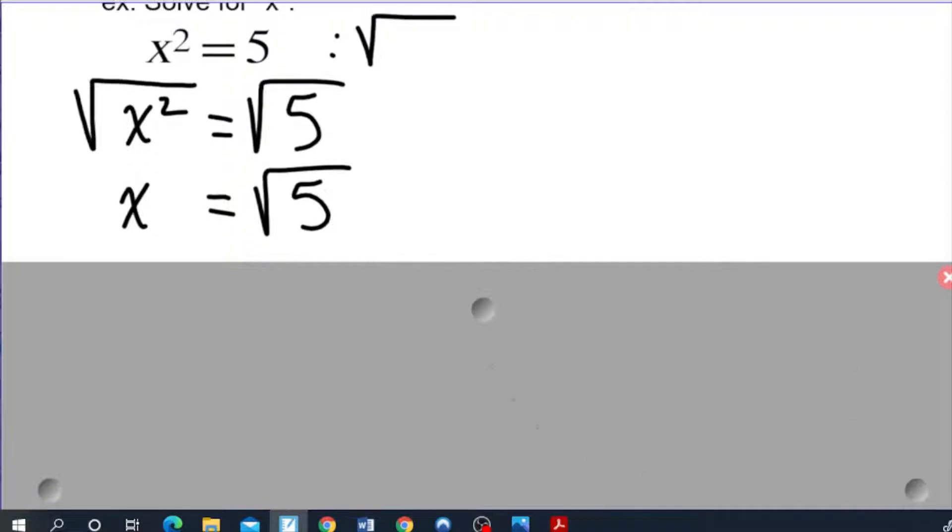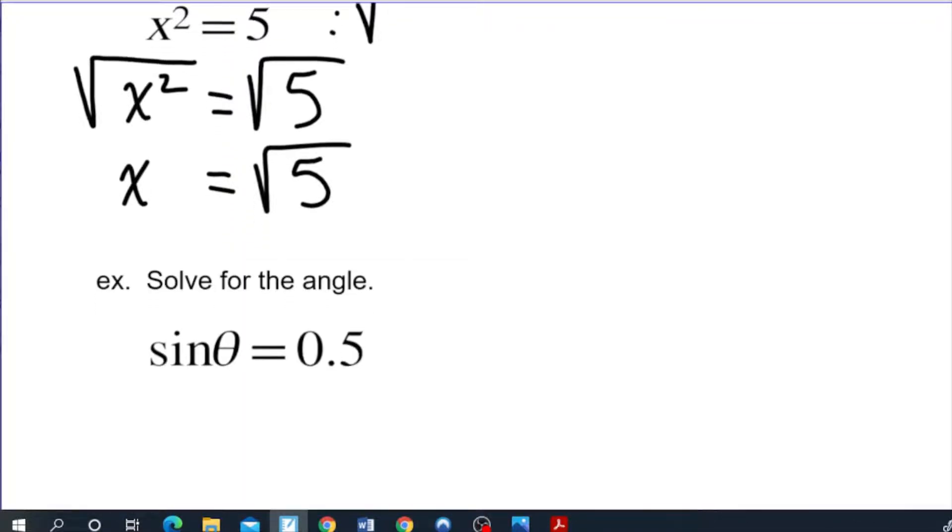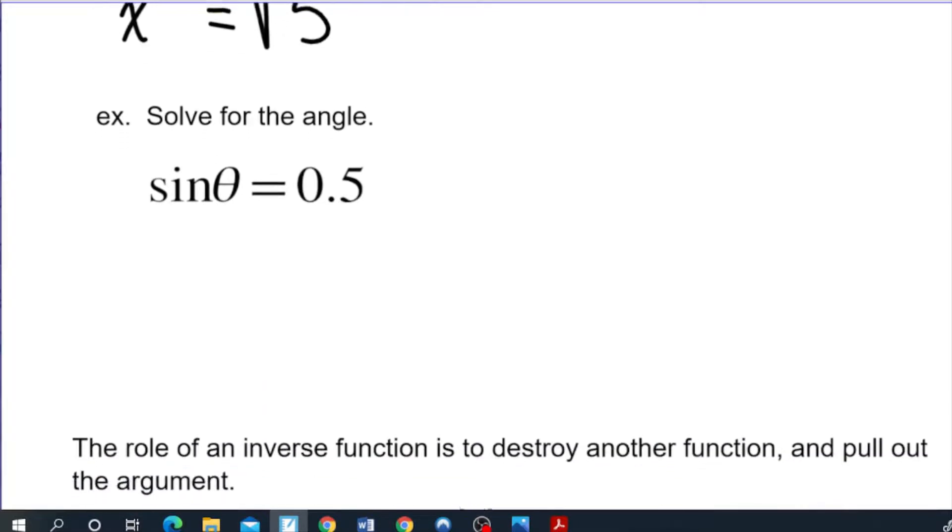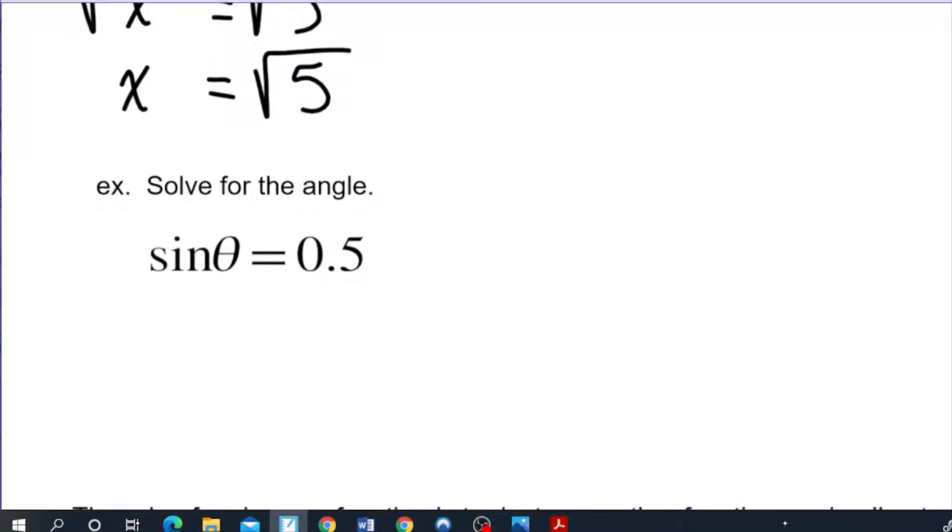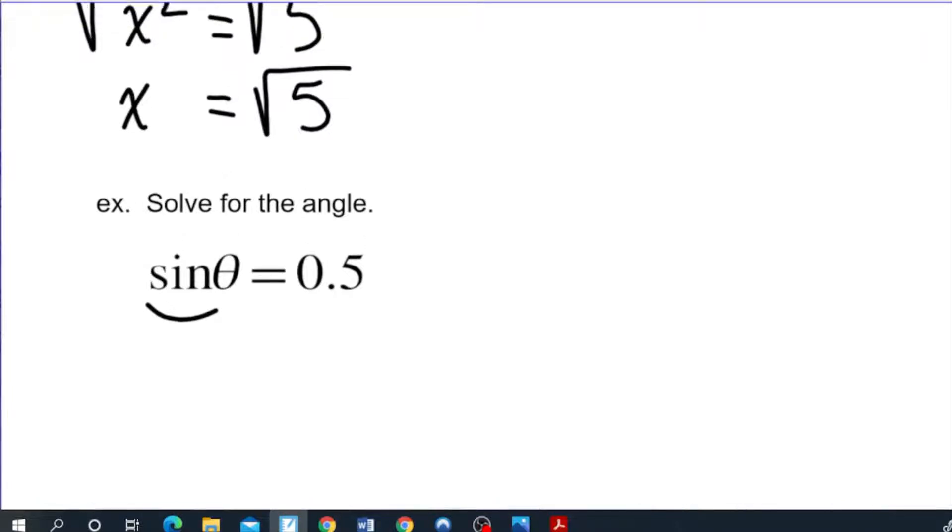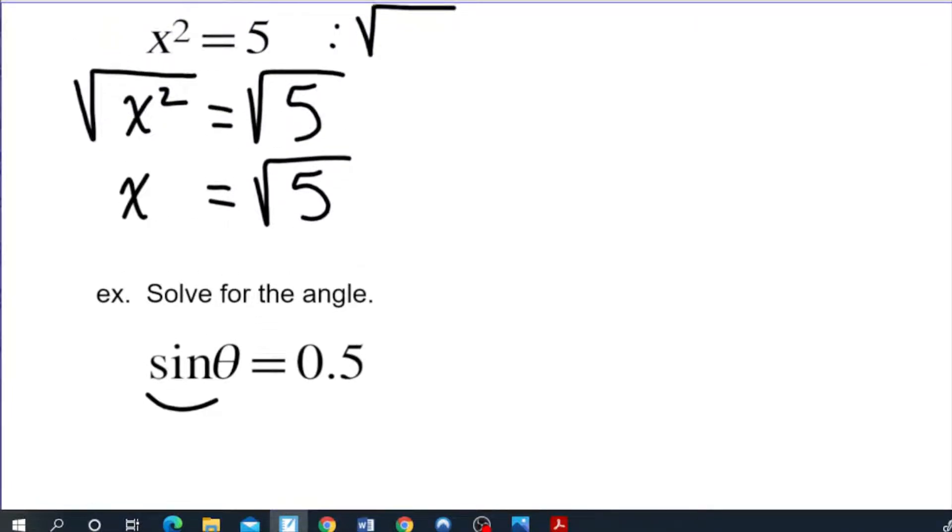So that's probably the most used inverse function up until this point but there are others that you have used. If you've taken any trigonometry classes at this point, this is a situation where you also need an inverse function. So it says solve for the angle. We have sin θ is equal to 0.5. Well the sine here is not multiplying theta even though it is right beside it. It has enveloped theta similarly to how the x squared had enveloped the x at the beginning of the first example.